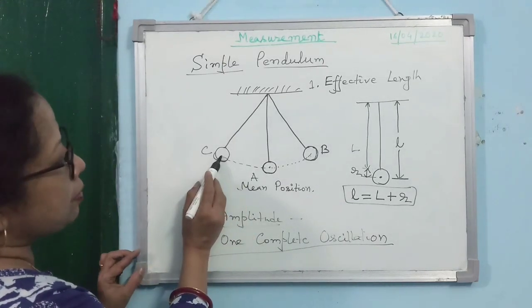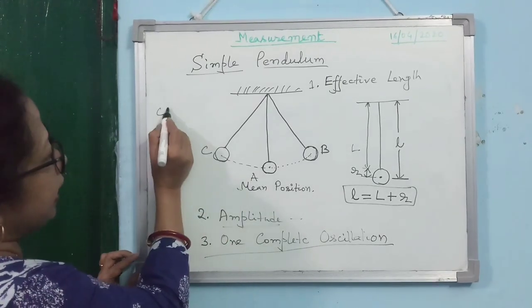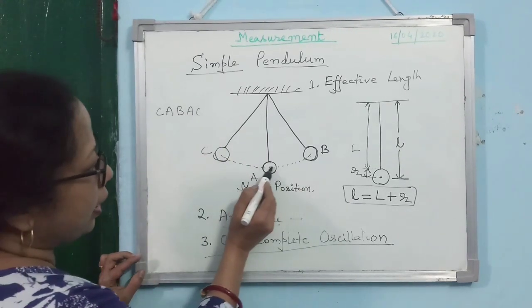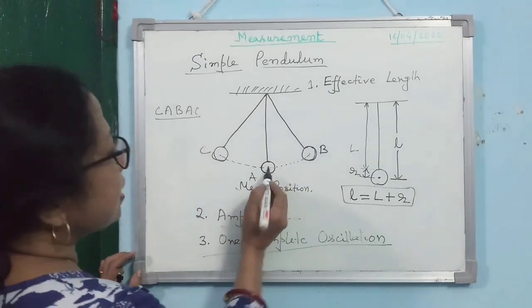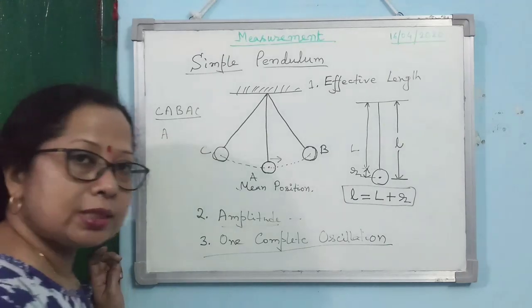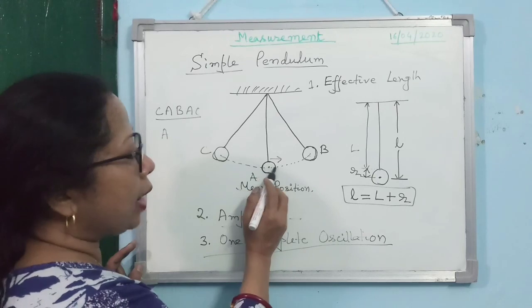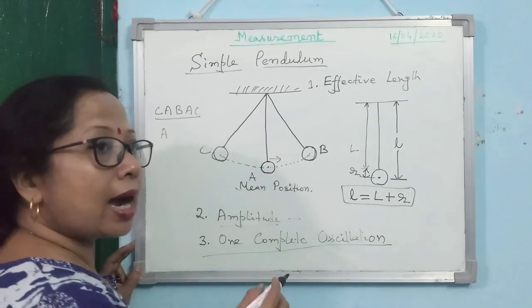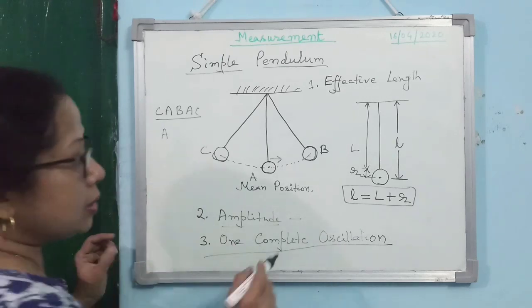If the pendulum starts from C, one complete oscillation is: C, then A, then B, then A, then back to C. It starts from C, goes to A to B, then comes back to C. More generally, one complete oscillation means starting to move in one direction from one position until it returns to the same position and starts moving in the same direction again.